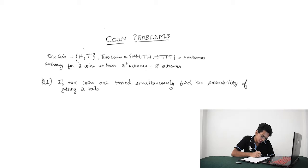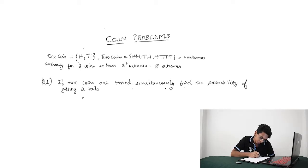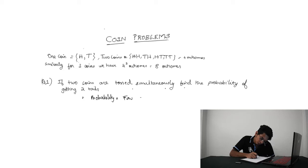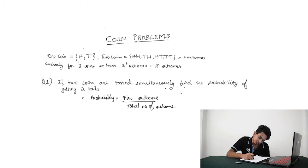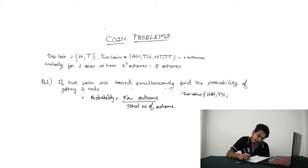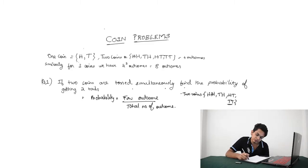Now let's take a simple example. The first question is: if two coins are tossed simultaneously, find the probability of getting two tails. The formula is: probability equals favorable outcome by total number of outcomes. When you toss two coins simultaneously, the outcomes are two heads, one tail and one head, one head and one tail, or both tails. Getting two tails, there is only one possibility. So the probability is 1 divided by 4, that is 1 by 4.